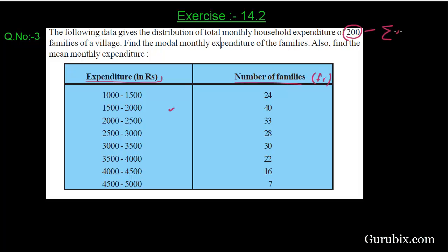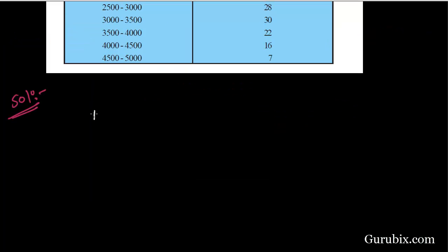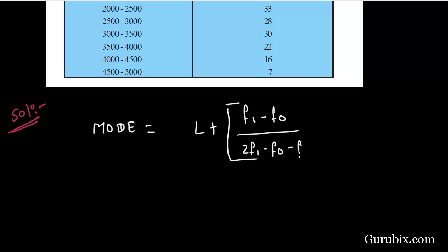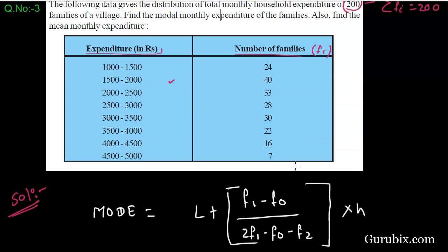So summation of Fi is equal to 200. Now we have to find mode and mean of this data. We know that mode is equal to L plus F1 minus F0, divided by 2F1 minus F0 minus F2, into H. Now we can see in this table the maximum frequency is 40. So this is F1, and the class corresponding to it is our modal class.